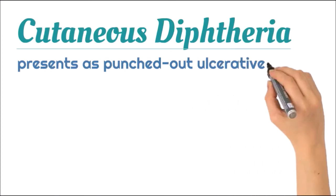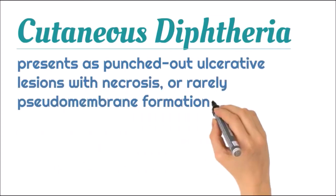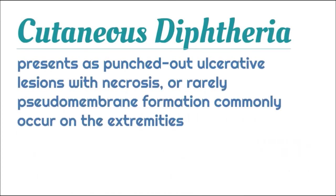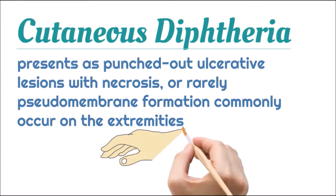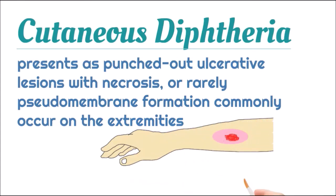Cutaneous diphtheria presents as punched-out ulcerative lesions with necrosis, or sometimes pseudomembrane formation, commonly seen on the extremities.